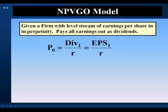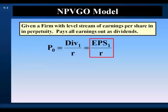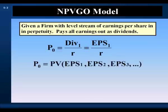It pays out all of its earnings as dividends. We can value this firm's stock with the no-growth case of the Dividend Discount Model, where the stock price is equal to the level dividend divided by the opportunity cost of capital. As all earnings are paid out as dividends, we could also write this as the fixed earnings per share divided by the cost of capital. The price of the firm's stock is the present value of a stream of earnings per share generated by the firm's assets in place.